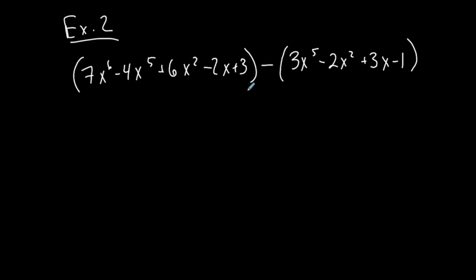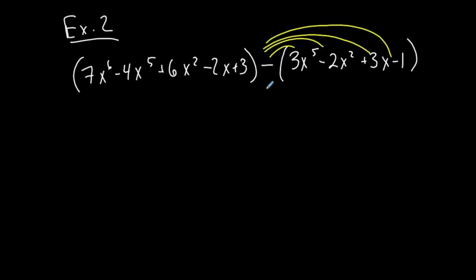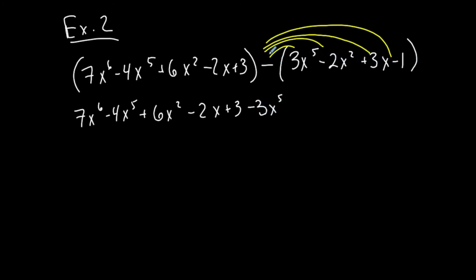The only difference between subtraction and addition is the fact that now there is something in front of these parentheses, which has to distribute to every term within the second polynomial. It's like saying negative 1 times this. So when I bring down the first polynomial, I can just bring those terms down as-is: negative 4x to the 5th plus 6x squared minus 2x plus 3. I now have to distribute this negative, which is going to change every single sign: minus 3x to the 5th, minus minus becomes plus 2x squared, minus 3x, and then minus minus becomes plus 1. Now I just have to combine like terms.